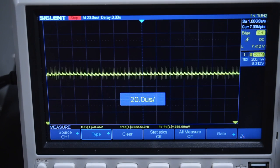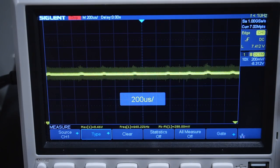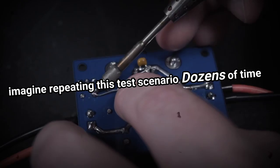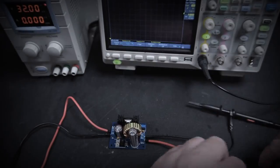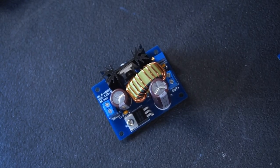Now don't get me wrong 288mV of noise is by no means good, but it's a big step in the right direction. Now imagine repeating this test scenario dozens of times with a seemingly unlimited amount of configurations. You can probably imagine how many hours I've spent trying to perfect the design.